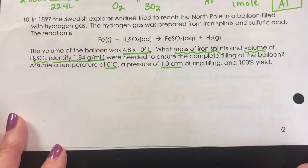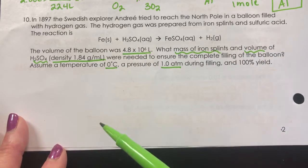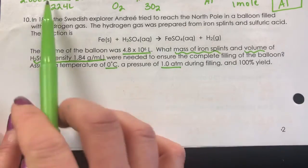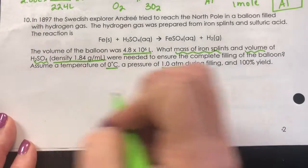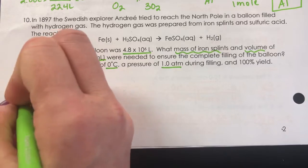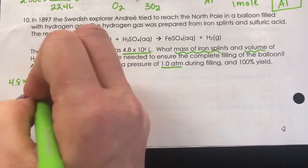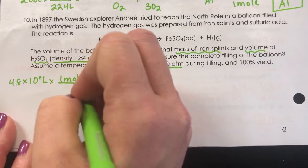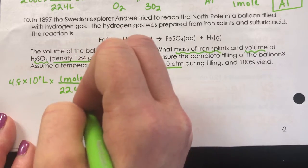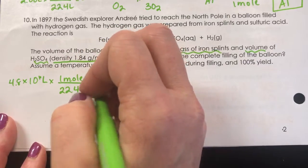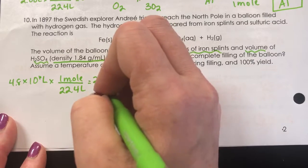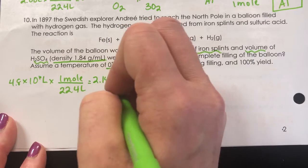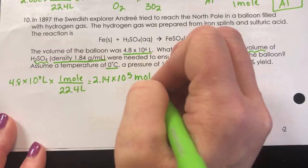Since it's at STP, you can do it one of two ways. You can use the ideal gas law or the ratio. I'll do the ratio. So 4.8 times 10 to the 6 liters, and we know that one mole is equal to 22.4 liters. So that means that the hydrogen that's filling that balloon is 2.14 times 10 to the 5th moles.